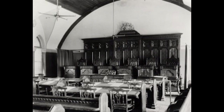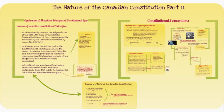Then you have the unwritten Constitution, which cannot be enforced in court but has political repercussions. These involve constitutional conventions — things that have always been done — in other words, the idea of a responsible government.